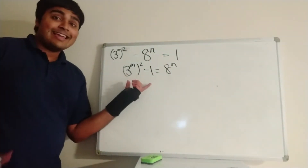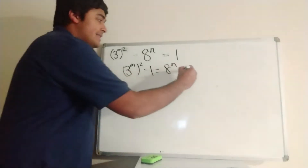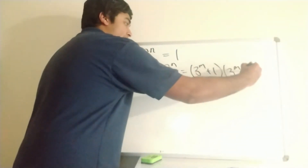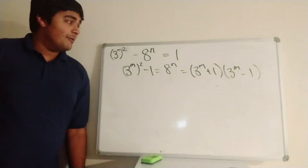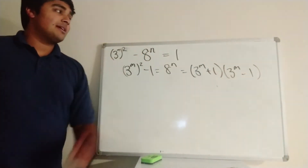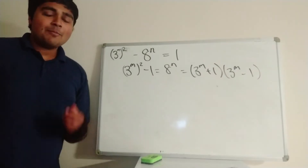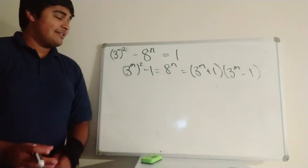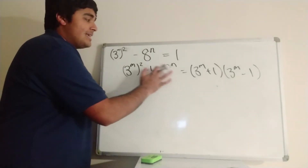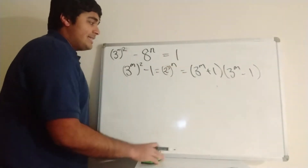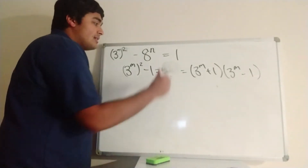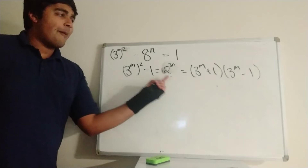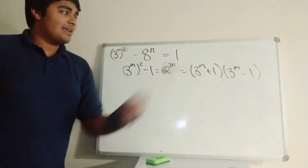This is the difference of two squares, so we can write it as 3 to the m plus 1, times 3 to the m minus 1. So 8 to the power of n equals 3 to the m plus 1 times 3 to the m minus 1. Remember, m and n are positive integers, so this is simply a power of 8. Since 8 is just 2 cubed, this is 2 cubed raised to the n, or in other words, 2 to the 3n. So we have a power of 2 equal to something times something else.